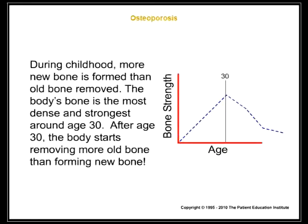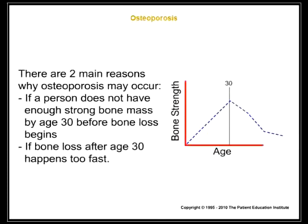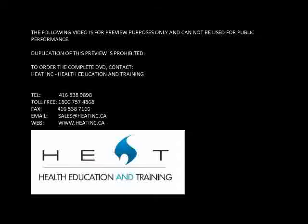After age 30, the body starts removing more old bone than forming new bone. There are two main reasons why osteoporosis may occur: if a person does not have enough strong bone mass by age 30 before bone loss begins, or if bone loss after age 30 happens too fast.